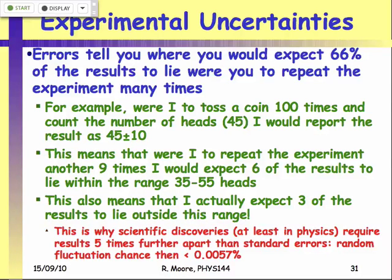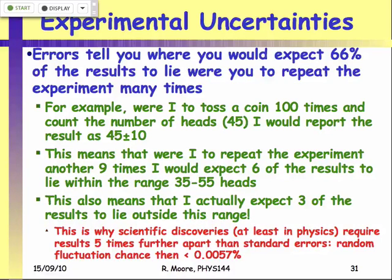What the plus-minus means is: if you repeated the experiment a number of times, it is the range in which you would expect two-thirds of the results to lie — more precisely 68%, but typically expressed as two-thirds. So if you tossed a coin a hundred times and got 45 heads, you'd report this as 45 ± 10, where the uncertainty is just the square root of the number of tosses. If we repeated the experiment a hundred times, we'd expect two-thirds of them to lie within this range.